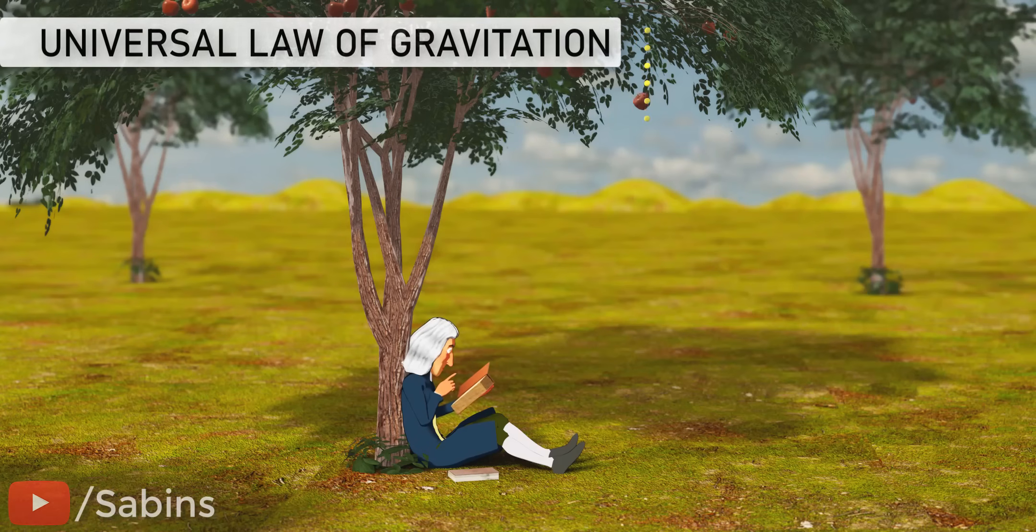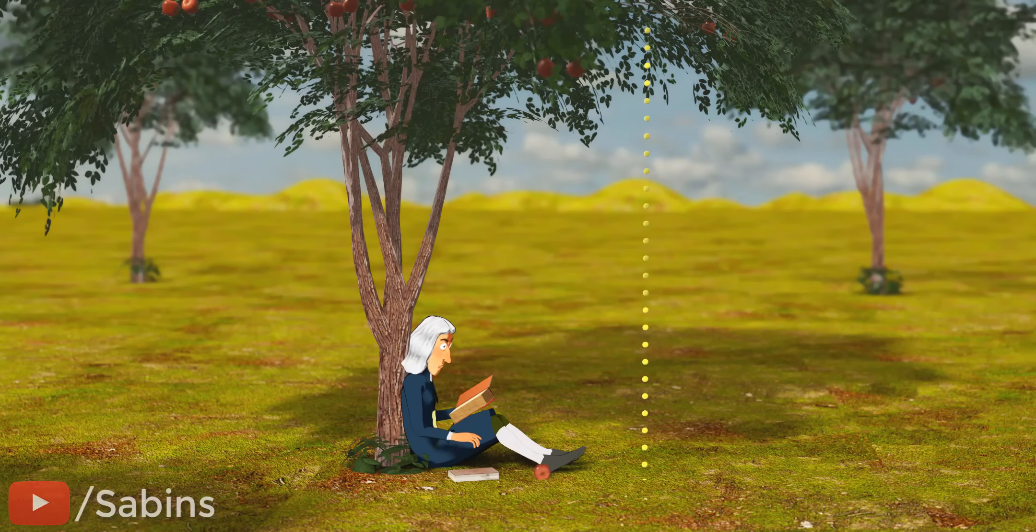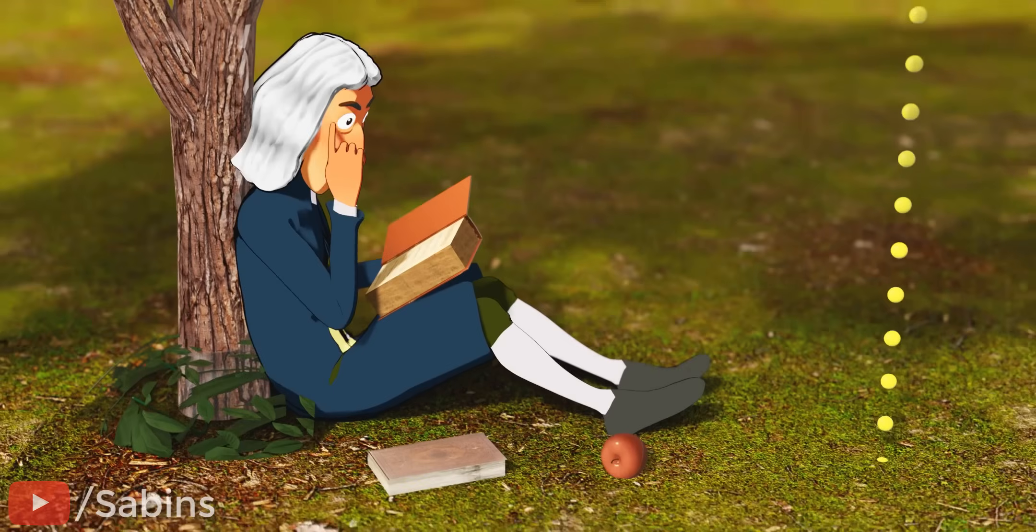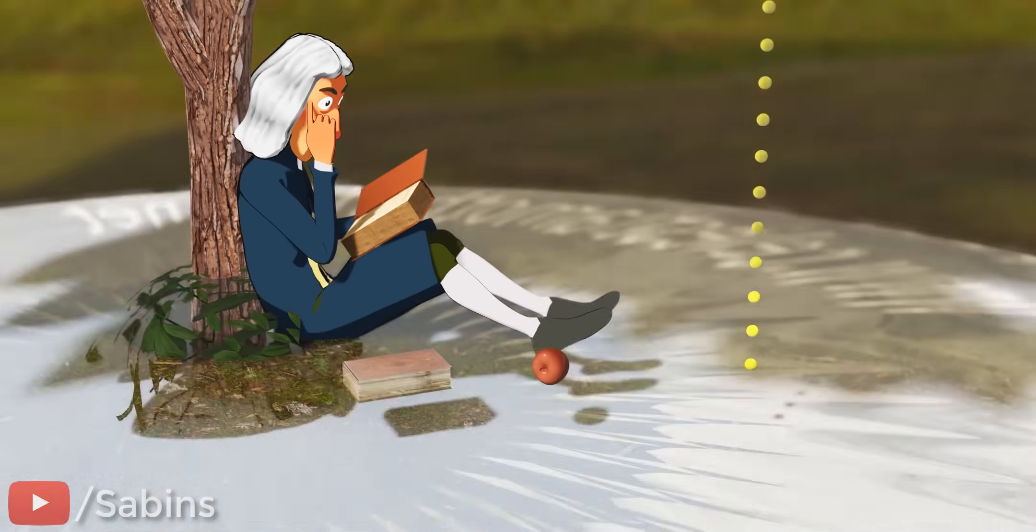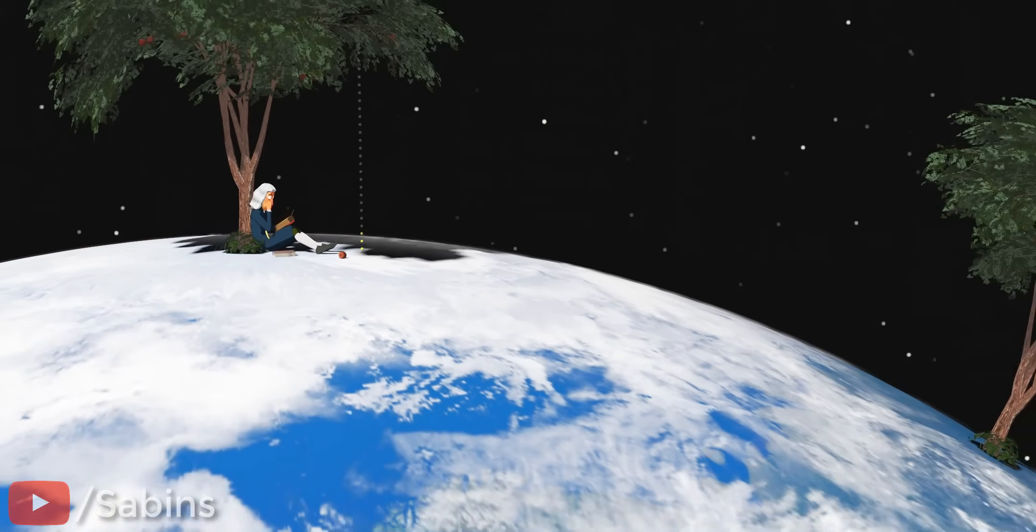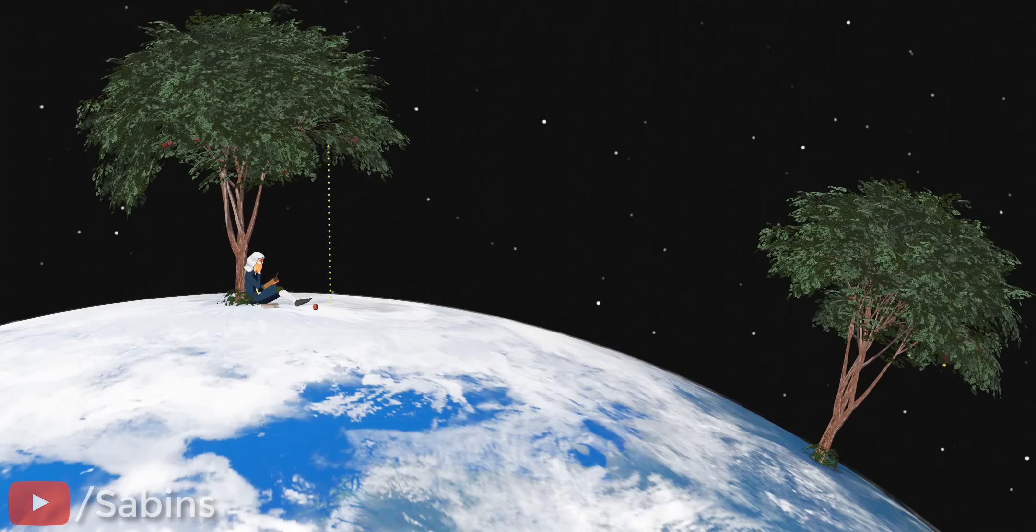As we all know the story, an apple fell down from a tree, which started Newton thinking. Let's assume there is one more apple tree that is far away from the current tree, and an apple falls from it as well, as shown.